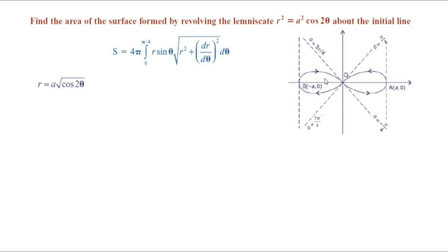That equals the area of the surface generated by revolving one arc OA, since the curve is always symmetric about the initial line. Mathematically, we have the formula: S equals 2 times the integral from 0 to π/4. Since we consider the surface generated by revolving one arc OA, the limits of theta vary from 0 to π/4. So S equals 2 times the integral from 0 to π/4 of 2π y times dS/dθ dθ, where dS/dθ is the arc length element: the square root of r squared plus (dr/dθ) squared.